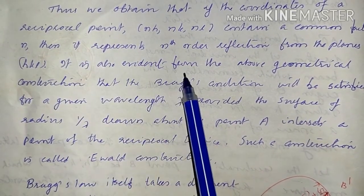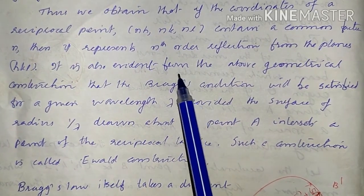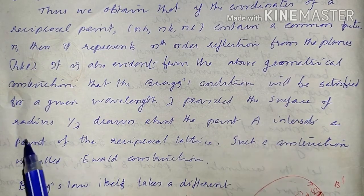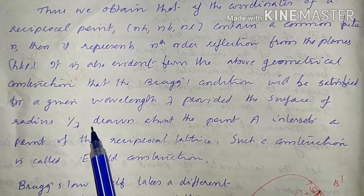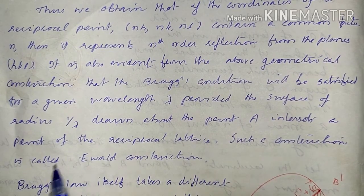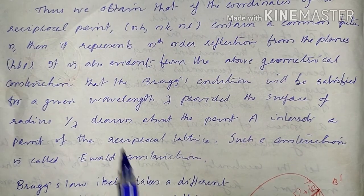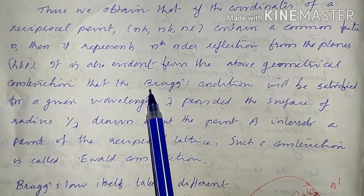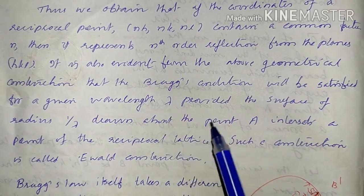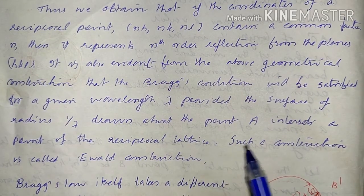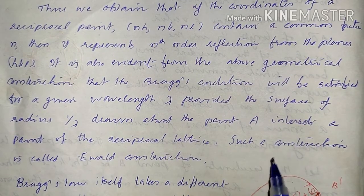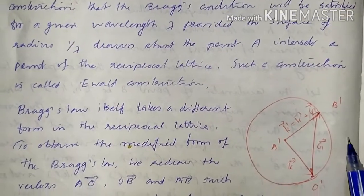It is also evident from the above geometrical construction that Bragg's condition will be satisfied for a given wavelength λ provided the sphere of radius 1/λ drawn about point A intersects a point of the reciprocal lattice. Such a construction is called the Ewald construction.